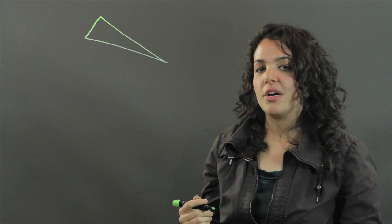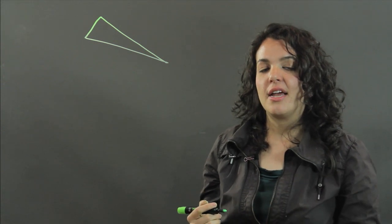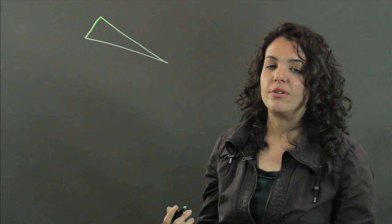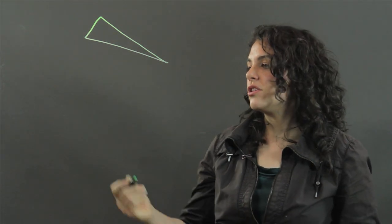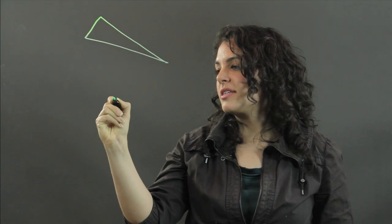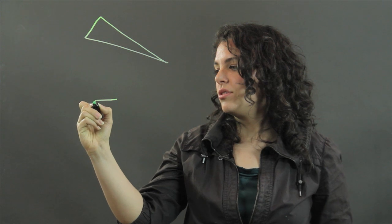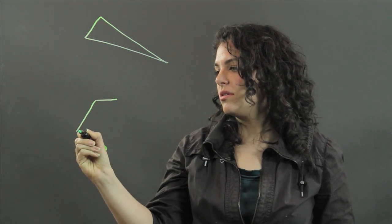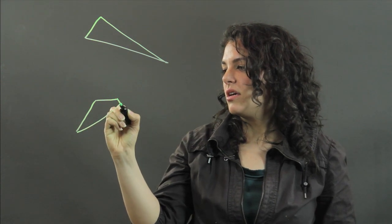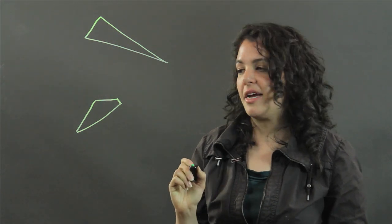Similarly, a quadrilateral that is scalene has no sides that are equal. But a quadrilateral has four sides. So to draw a scalene quadrilateral, you just draw four sides and make sure that none of them are of equal length.